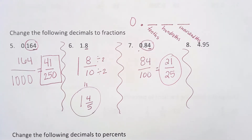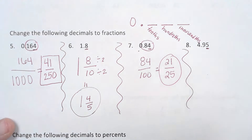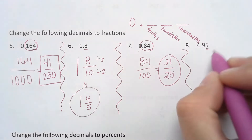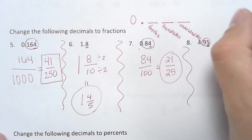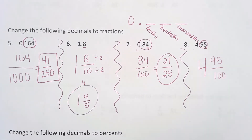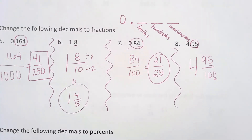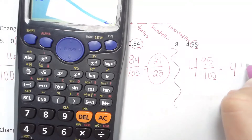Go ahead and pause the video and try number eight on your own, then press play when you are ready for the answer. You should have looked at the five to see what place value it was in. Since it's two numbers after the decimal point, that would be the hundredths place. So you should have written 95 out of 100. Notice you had a whole number — if you have a whole number, you just drop it down to make your fraction a mixed number. Then simplify — the last numbers are five and zero, so five goes into both. Your simplified answer should be four and 19 twentieths.